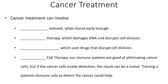Cancer treatments can involve surgical removal, however this is only if the cancer is found early enough and can be accessed through a surgical location. Next we have radiation therapy, whose goal is to damage and disrupt the DNA of rapidly dividing cells — of which cancer cells are one type.